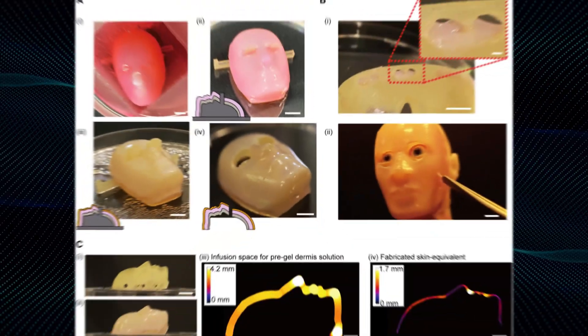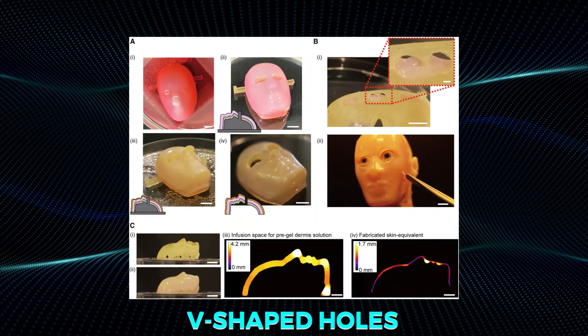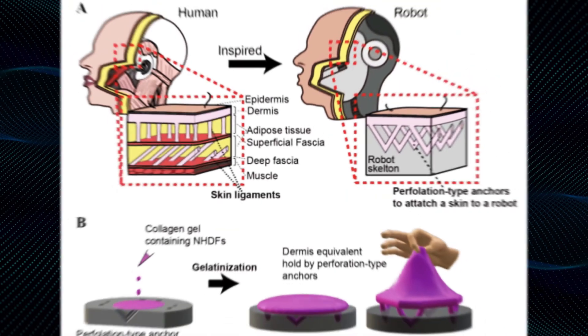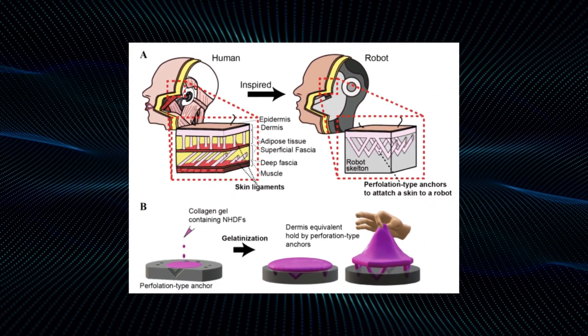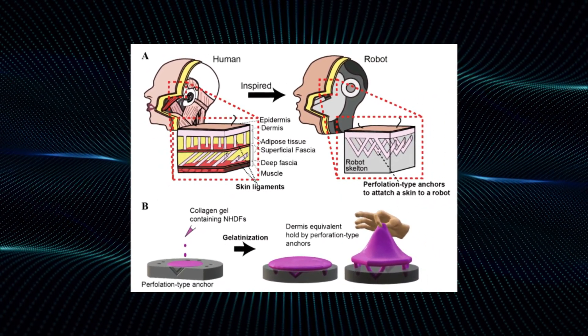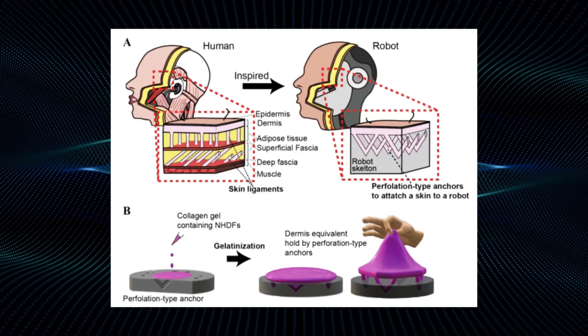They developed tiny V-shaped holes on the robot's surface and filled them with a collagen gel. This gel acts like an anchor, allowing the living skin to attach securely and move naturally with the robot.